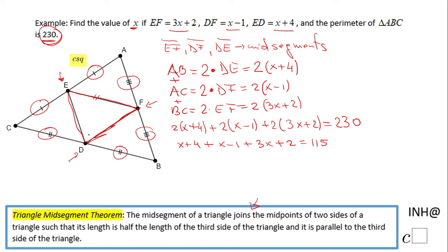Now we're going to combine the x's, and we have 5x here. We can combine the numbers and we're going to have plus 5 equals 115. We can subtract 5 on both sides and we have 5x equals 110.